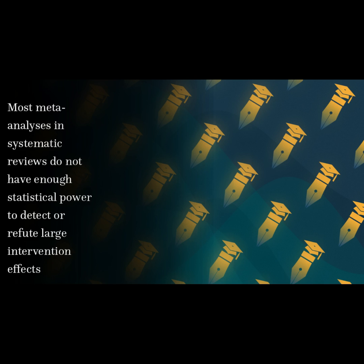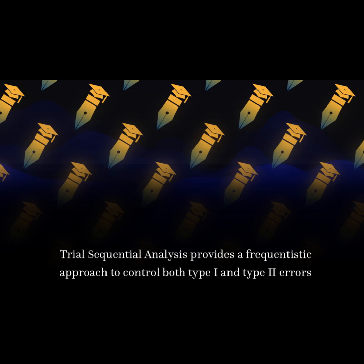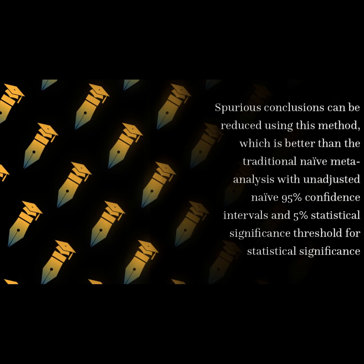Most meta-analyses in systematic reviews do not have enough statistical power to detect or refute large intervention effects. Trial sequential analysis provides a frequentistic approach to control both type I and type II errors. Spurious conclusions can be reduced using this method, which is better than the traditional naive meta-analysis with unadjusted naive 95% confidence intervals and 5% statistical significance threshold for statistical significance.